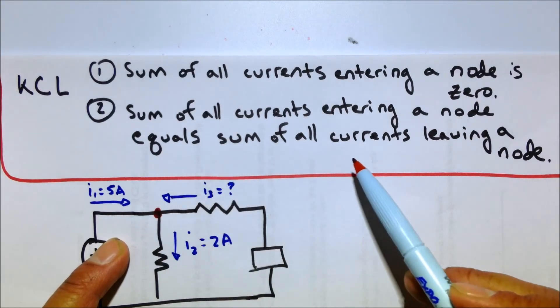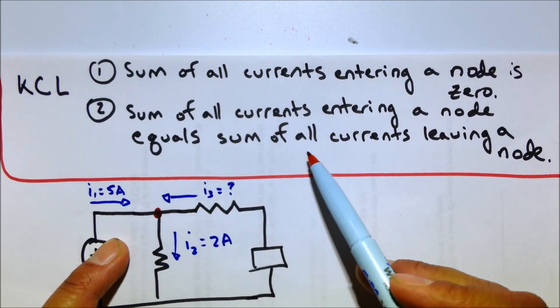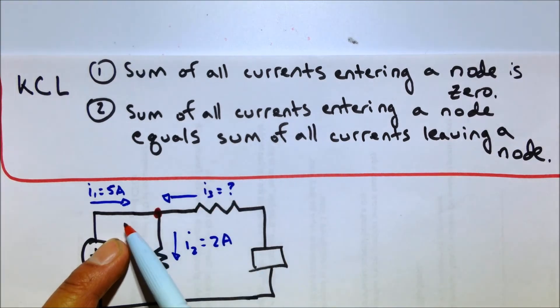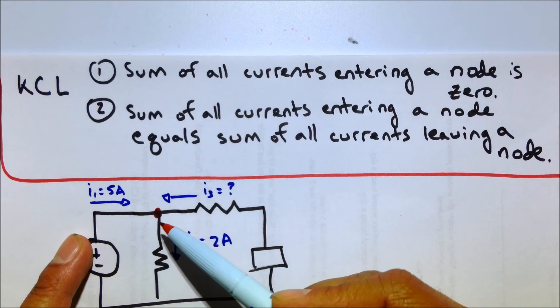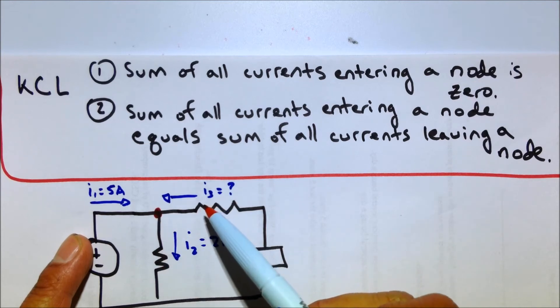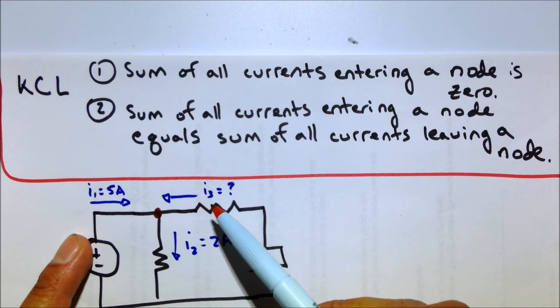So just think of this. This will be way easier. The sum of all currents entering a node equals the sum of all currents leaving a node. So in this case, we have five amps going into the node there. We have two amps leaving that node here, and the problem we want to solve is what is that guy? What is I3? What's the current through that resistor?